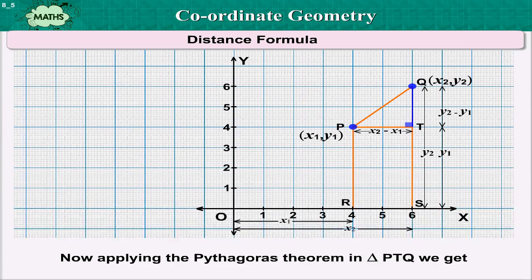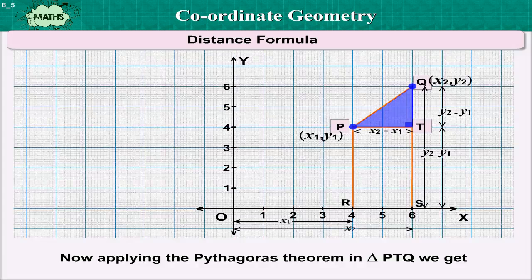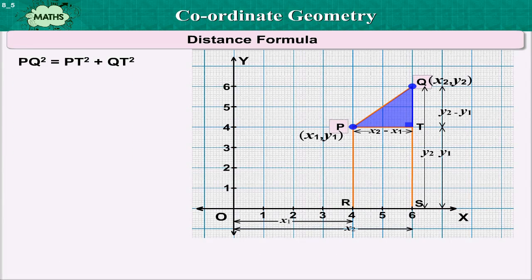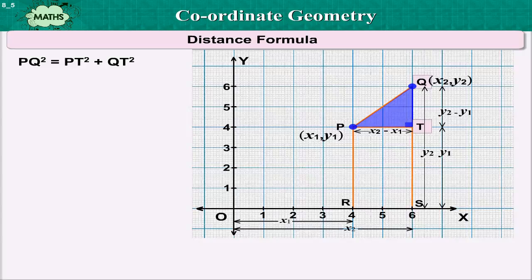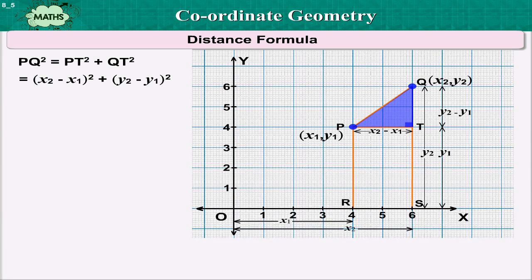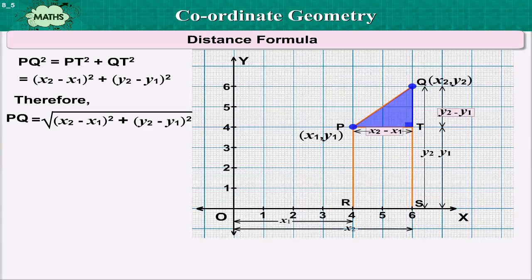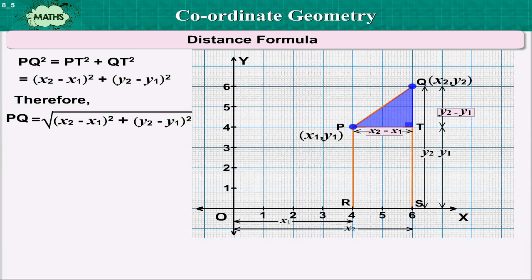Now, applying the Pythagoras theorem in triangle PTQ we get PQ square is equal to PT square plus QT square that equals to x2 minus x1 the whole square plus y2 minus y1 the whole square. Therefore, PQ is equal to square root of x2 minus x1 the whole square plus y2 minus y1 the whole square.